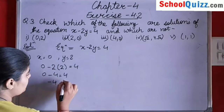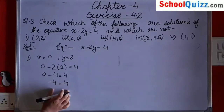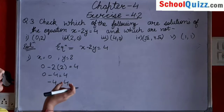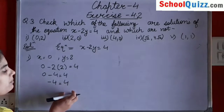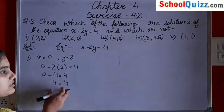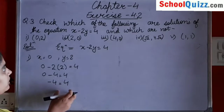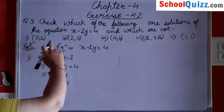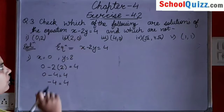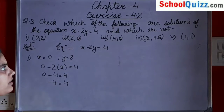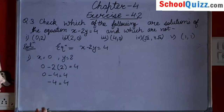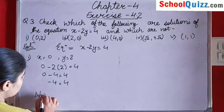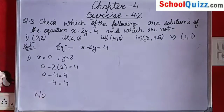We get minus 4 equals to 4. These are not equal. That means (0, 2) is not a solution of x minus 2y equals to 4. So the answer is no.